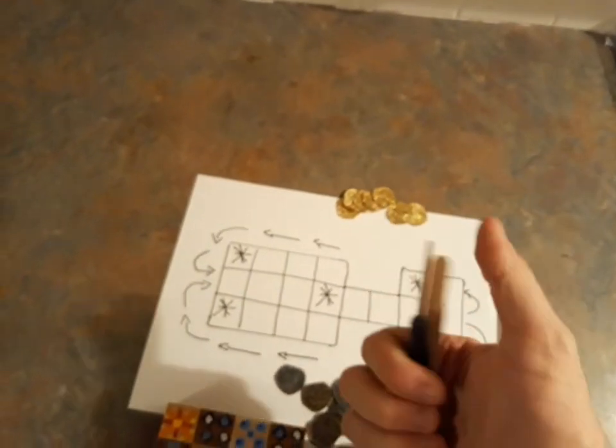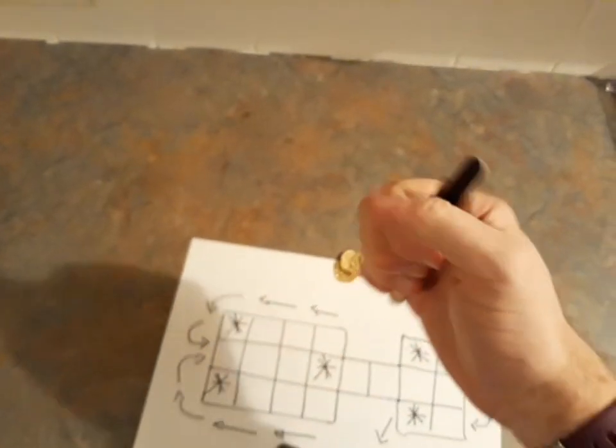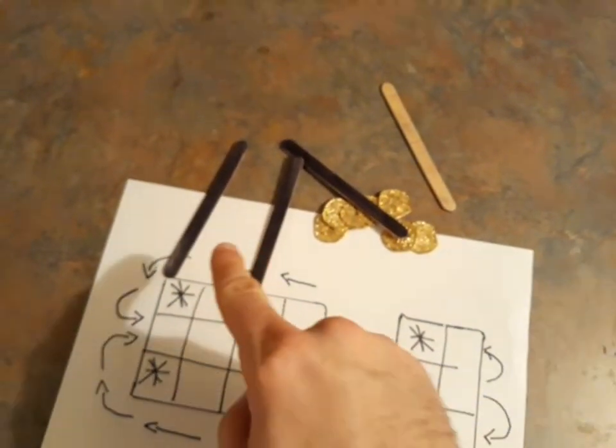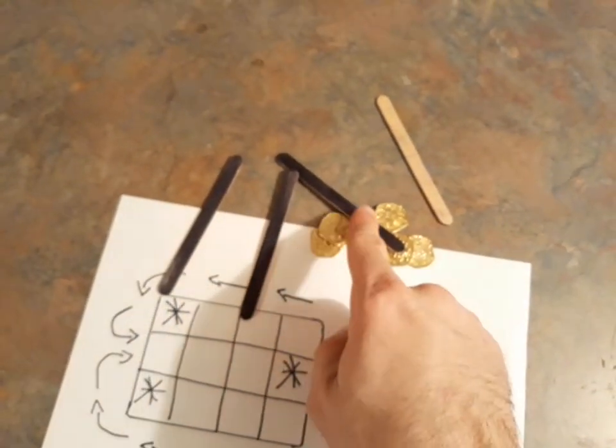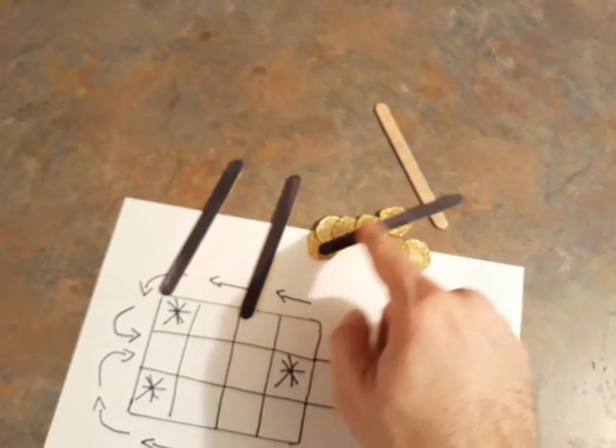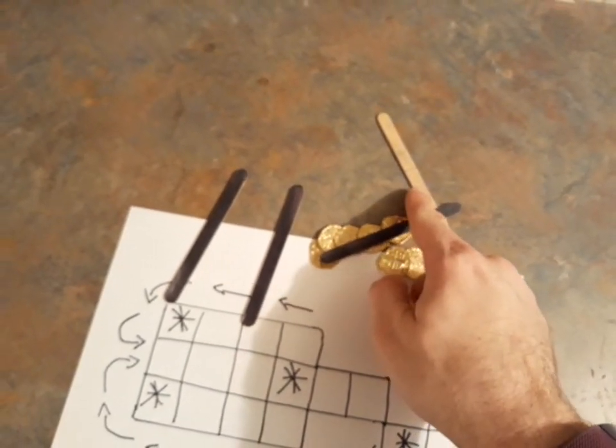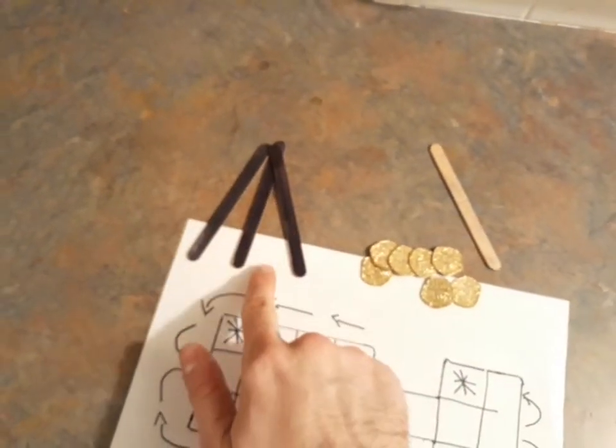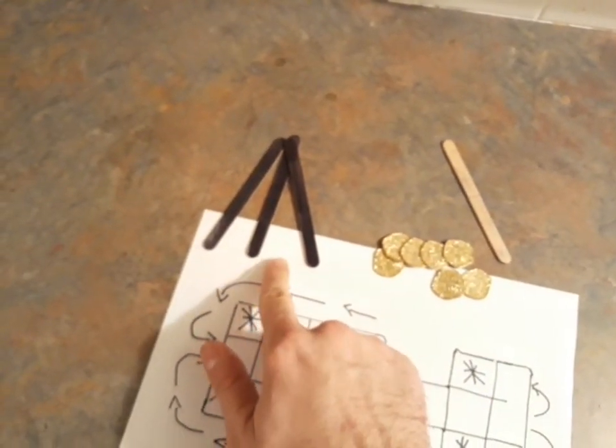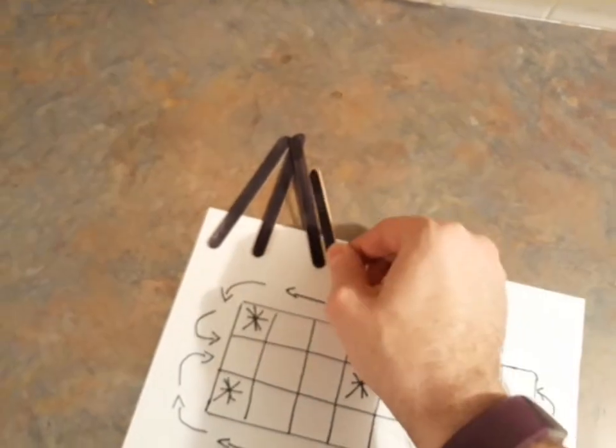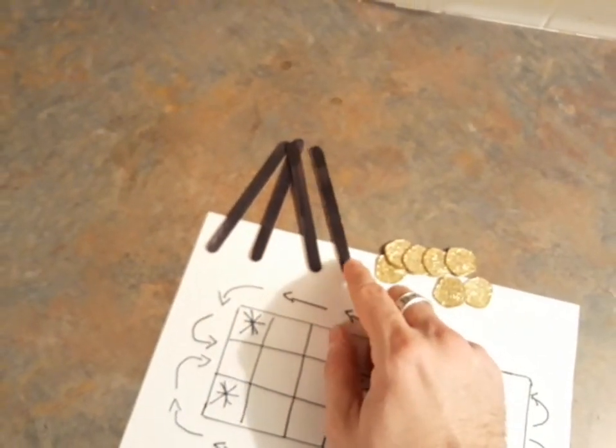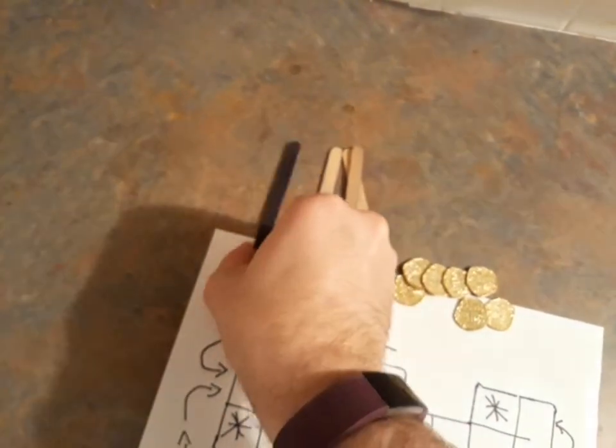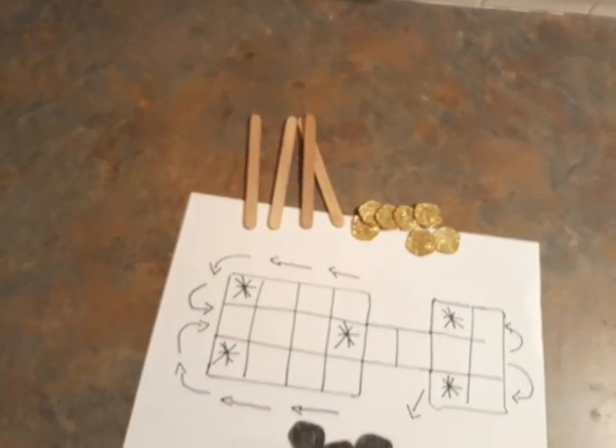You take four sticks, you bundle them up and then you drop them on the ground and you count how many sticks come up on the dark side, how many are on the light side. And depending how many show up dark is how many moves you get to make. So three with a potential of four being the most moves you could make or potentially losing a turn, not getting to move anything at all.